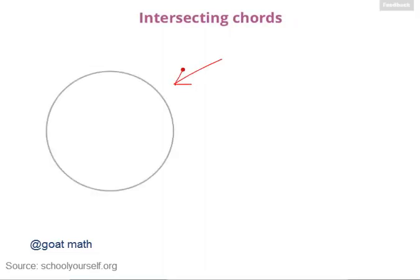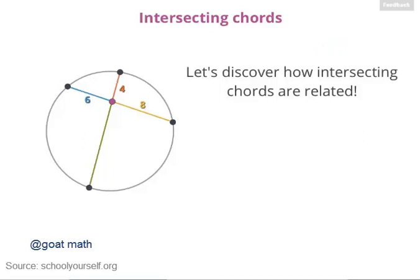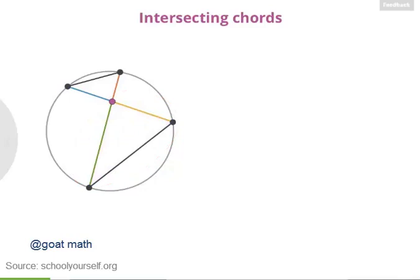Here we'll discover a property of intersecting chords in circles. Here's a circle, and let's draw in two chords, and here's where they intersect. Let's look at the four line segments created by this intersection. Suppose this one has length 4, this has length 6, and this has length 8. There's a special rule for intersecting chords in circles that you can use to find the length of this remaining segment. Let's draw in two more line segments, and notice that we have two triangles — one up here and the other down here. We'll be exploring how these two triangles are related.